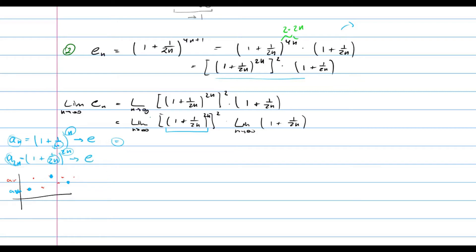So this first limit is e squared. On the other side, 1 over 2n tends to 0, so the limit of 1 plus 1 over 2n is just 1. Therefore, the limit of the whole sequence is e squared.